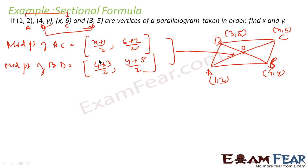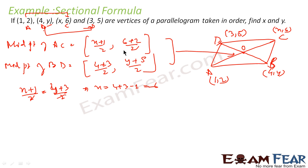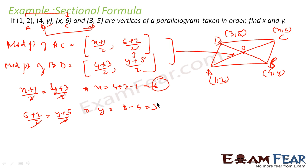We make the x-parts equal: (x + 1)/2 = (4 + 3)/2, so x = 4 + 3 − 1 = 6. Then making the y-parts equal: (6 + 2)/2 = (y + 5)/2, so y = 6 + 2 − 5 = 3. Thus we have found the values x = 6 and y = 3.